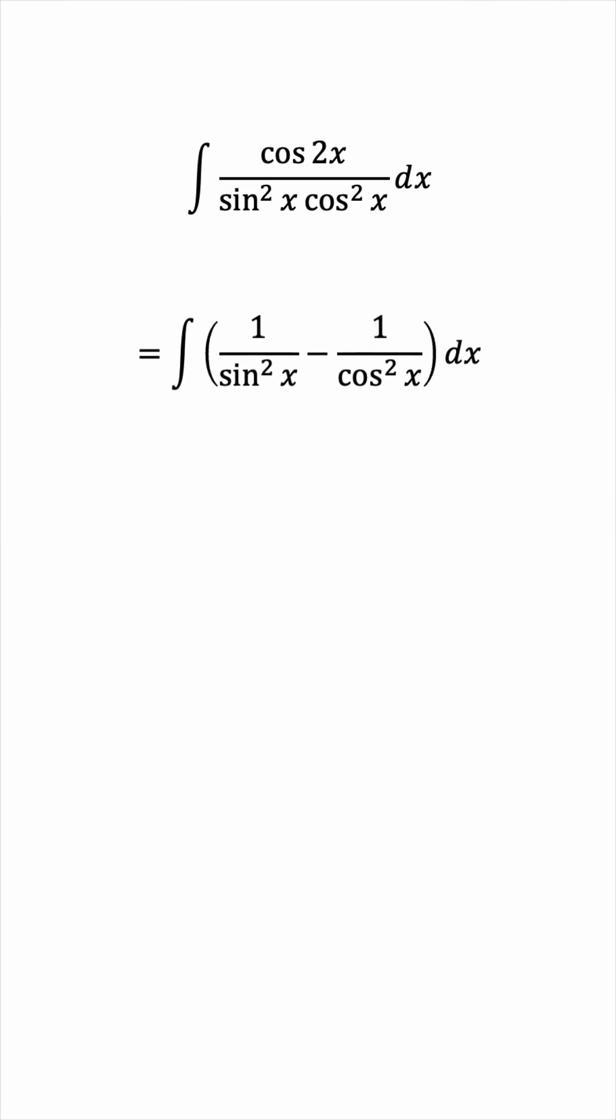The reciprocal of sine is cosecant, and the reciprocal of cosine is secant, so we have cosecant squared minus secant squared. Each of these functions has a known antiderivative.